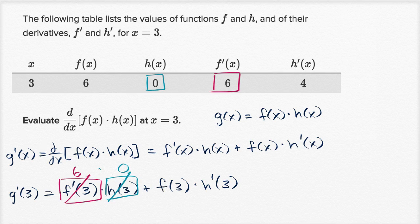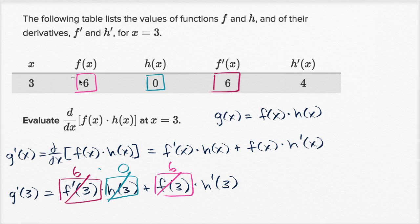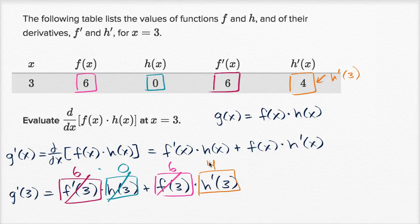Now f of three: the function f when x equals three is equal to six. And finally, h prime evaluated at three — h prime of x when x equals three is equal to four. So this is four. This evaluates to six times zero, which is zero, plus six times four, which is equal to 24. And we're done.